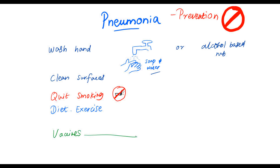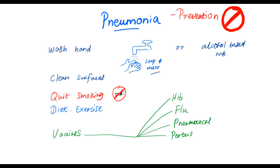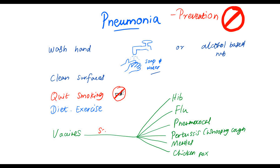Vaccines can help to protect against pneumonia. Vaccines which can help fight against pneumonia are the Hib vaccine, flu vaccine, pneumococcal vaccine, pertussis vaccine also known as the whooping cough vaccine, and measles and chickenpox vaccines. These vaccines are generally safe but sometimes patients can have side effects.